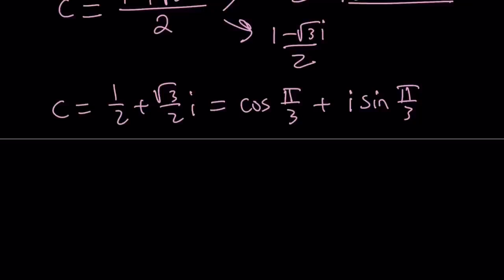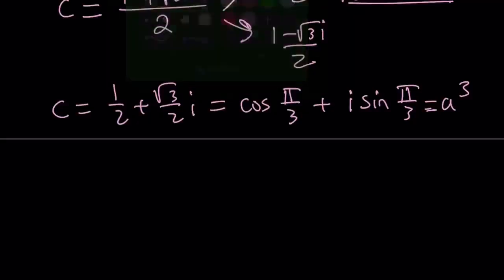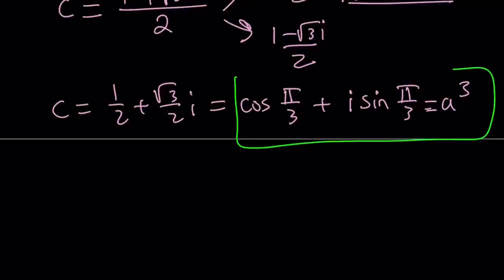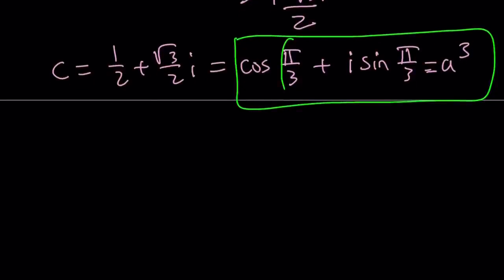Okay, but this is a³. So I have to cube root this number, but cube rooting complex numbers is super-duper easy if you know the rule. What is that called? De Moivre? I can never say that name, but all you have to do is take the argument and then divide by 3. Isn't that easy?